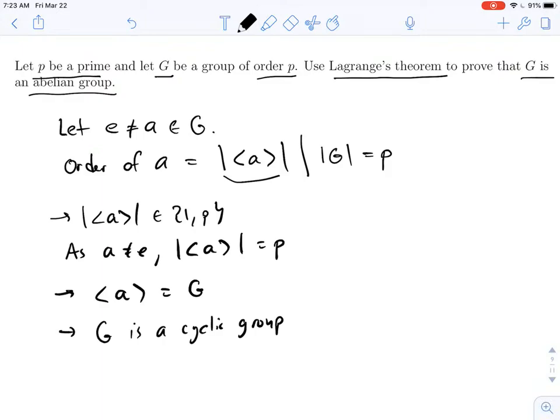But cyclic groups are abelian. Everything in G is a power of a. If I multiply two powers of a, it looks like a^i times a^j. Well, of course, that's equal to a^j times a^i. We've shown that this is a^(i+j), and this is a^(j+i). Of course, those are the same number. So once you know G is cyclic, that implies G is abelian.